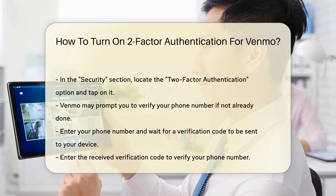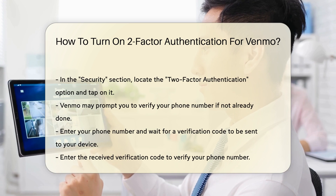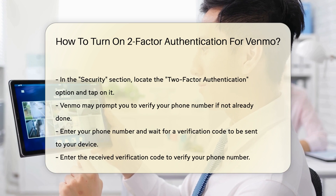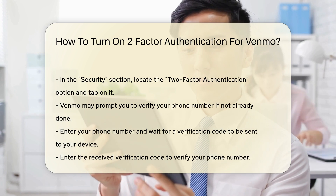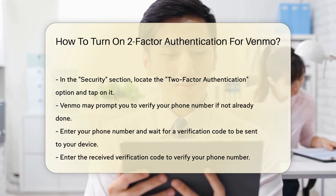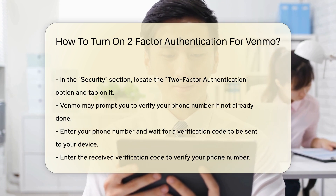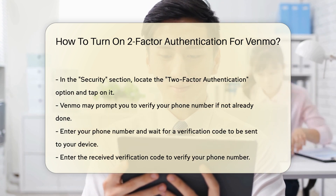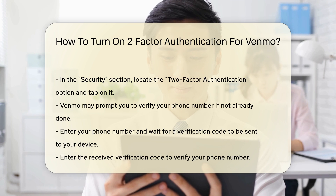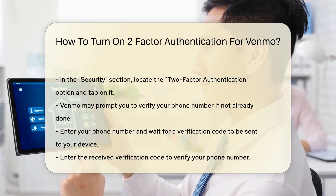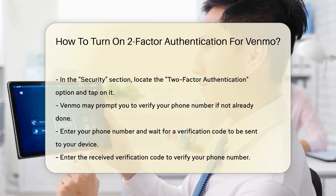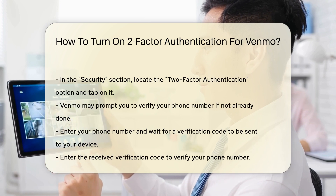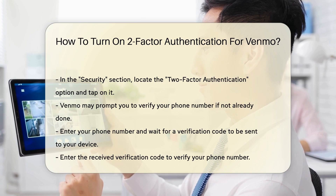In the Security section, you will find the two-factor authentication option. Tap on it to begin the setup process. Venmo will prompt you to verify your phone number if you have not already done so. Enter your phone number and wait for a verification code to be sent to your device. Once you receive the code, enter it in the provided field to verify your phone number. This step is crucial for enabling 2FA.